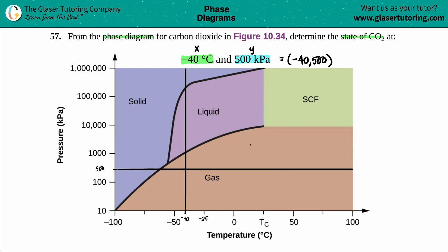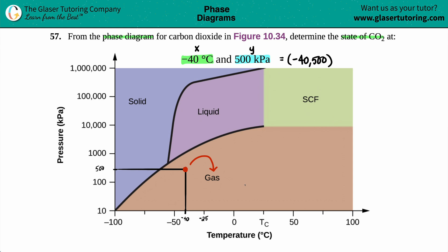Where those two lines intersect is our point of interest. We can clearly see that at this temperature and pressure, carbon dioxide is in the brown phase, which is the gas phase. So at negative 40 degrees Celsius and 500 kilopascals, carbon dioxide will be a gas. It's just reading a graph!